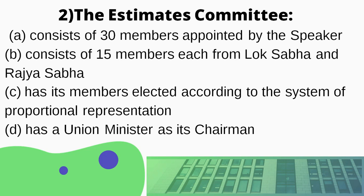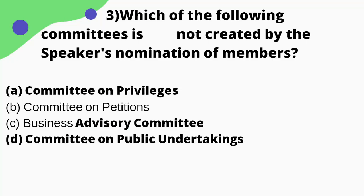The Estimates Committee: option A — consists of 30 members appointed by the Speaker; option B — consists of 15 members each from Lok Sabha and Rajya Sabha; option C — has its members elected according to the system of proportional representation; option D — has a union minister as its chairman. The right answer is option C — has its members elected according to the system of proportional representation.